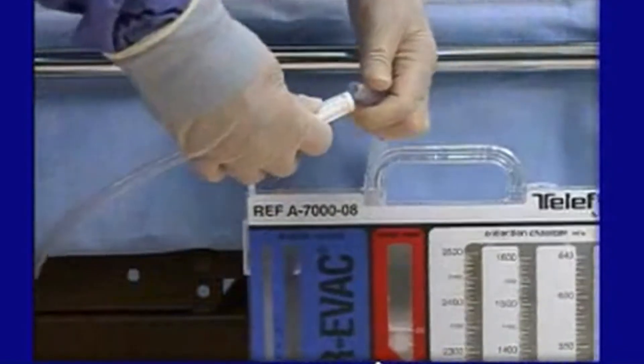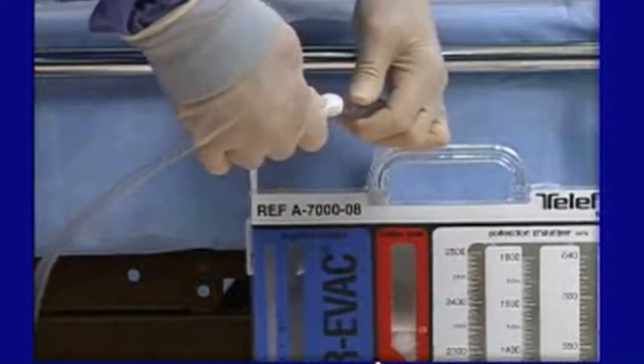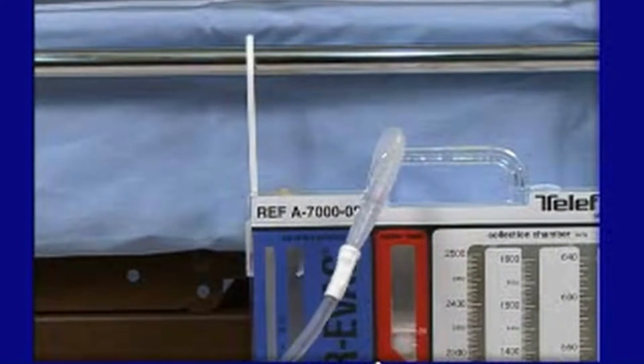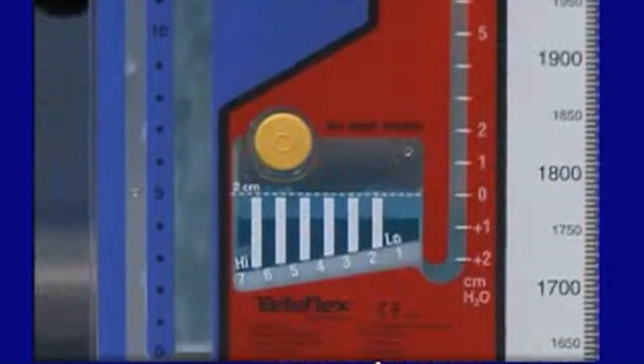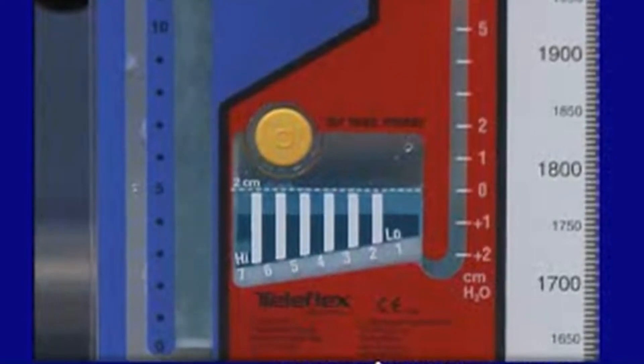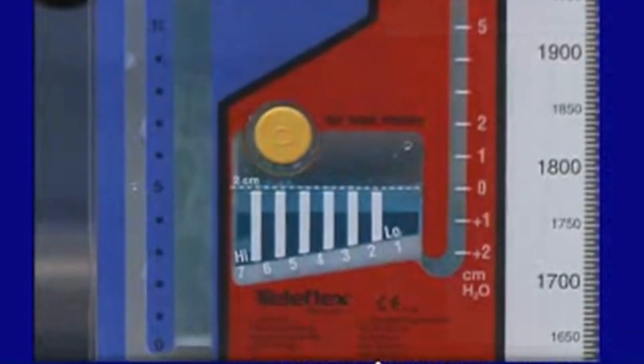Connect the short suction tube to the suction source and slowly increase suction until gentle bubbling occurs in the suction control chamber. Gentle bubbling confirms the set level of suction is being maintained. This bubbling will cause evaporation over time.